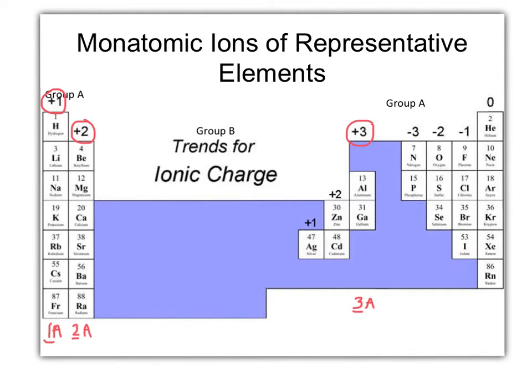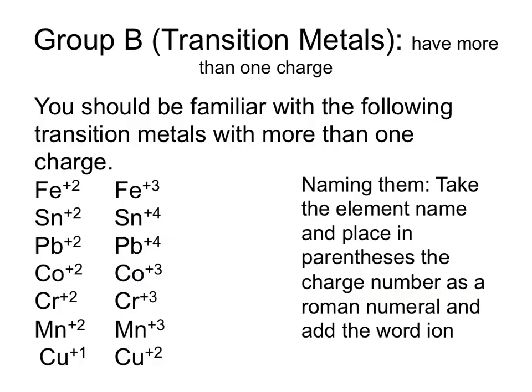Representative metals will only ever have one single charge to represent them. Group B elements are transition metals, and they have the possibility of having more than one charge. You should be familiar with the transition metals seen on the page. You don't have to memorize the charges.